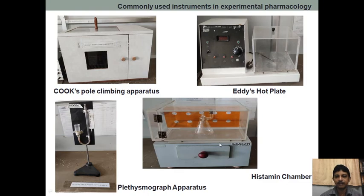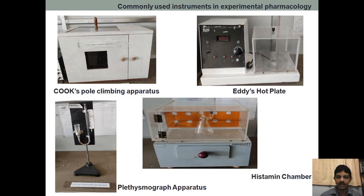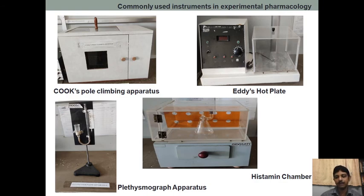This is the histamine chamber, where we observe the anti-asthmatic activity of the drug. We use guinea pigs, which are more sensitive to histamine. When we give the histamine spray, it produces asthmatic symptoms. We observe the effect of histamine spraying on the guinea pig both with and without the drug.